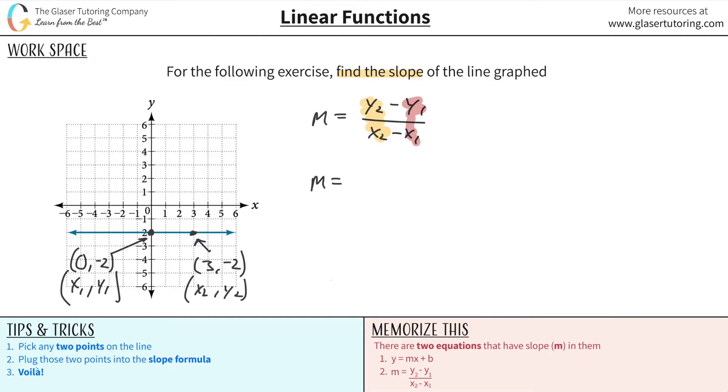So the slope here will be equal to y2 and I define my y2 value to be negative two. That's going to be then minus my y1 value which is negative two. Now you have to be careful, you got to plug in that double negative basically. So then divided now by, divided by x2 which is three, okay great, three, minus then x1 which is zero.